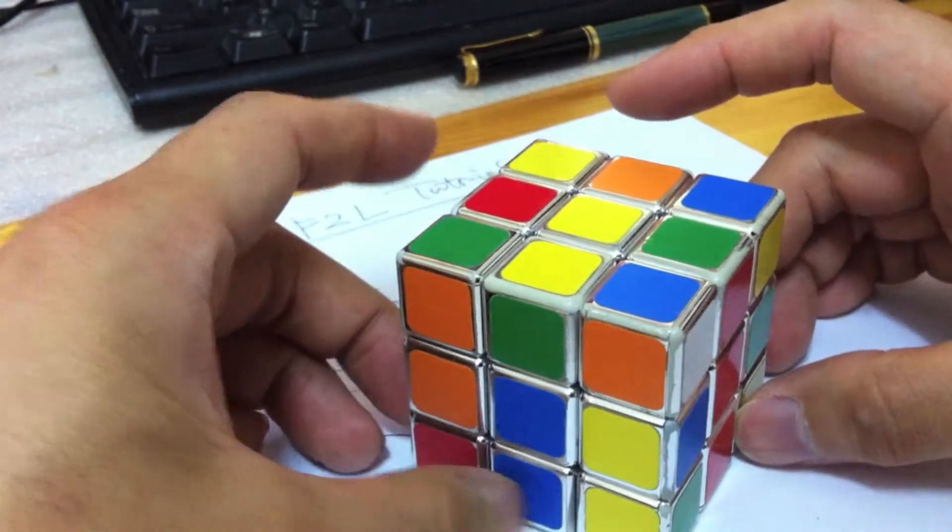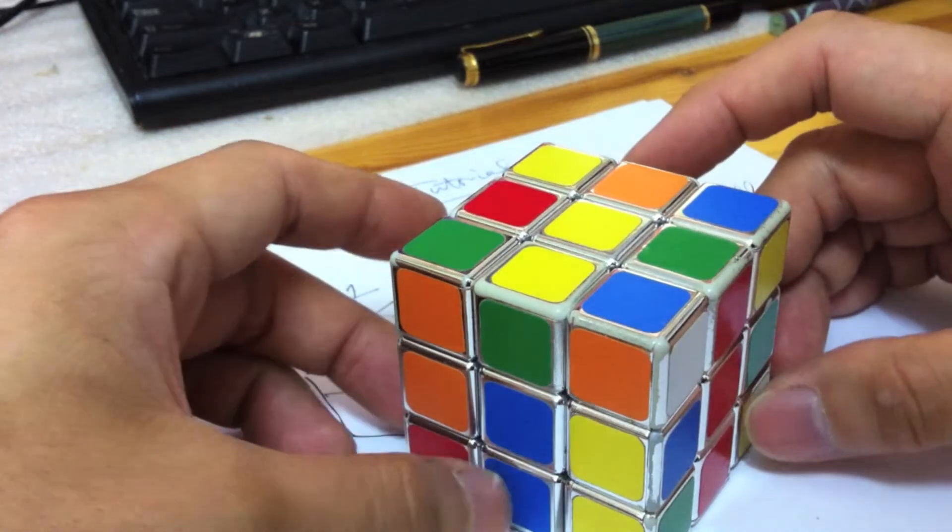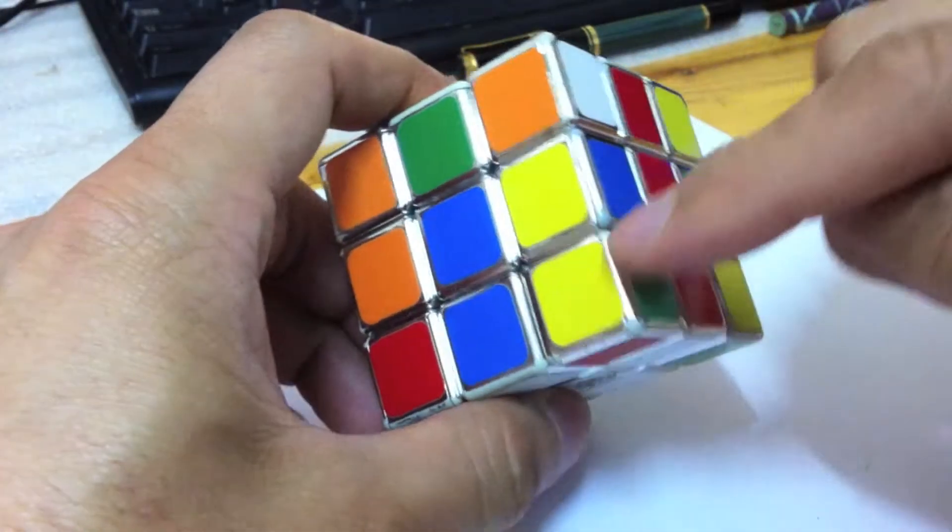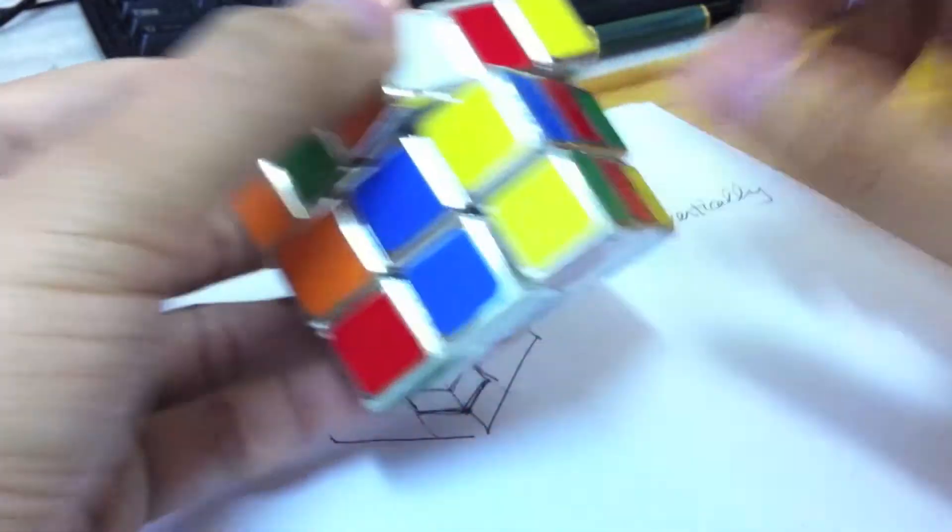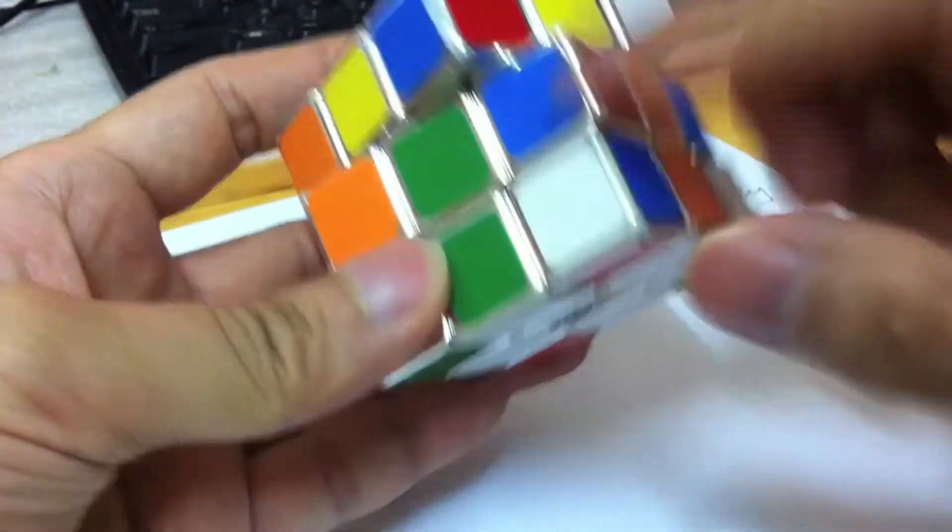Assume you have the white cross at the bottom finished. Our mission is to fill in the four columns: first column, second, third, and the fourth.